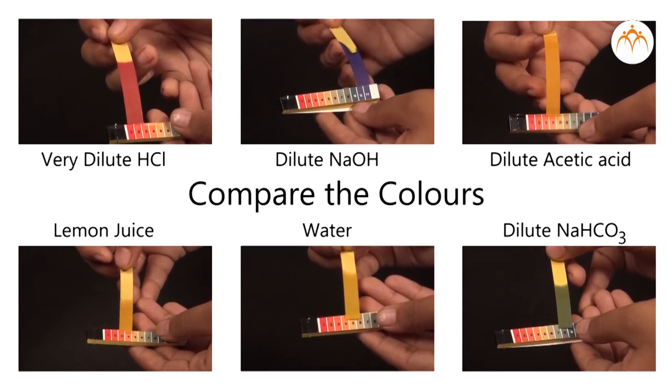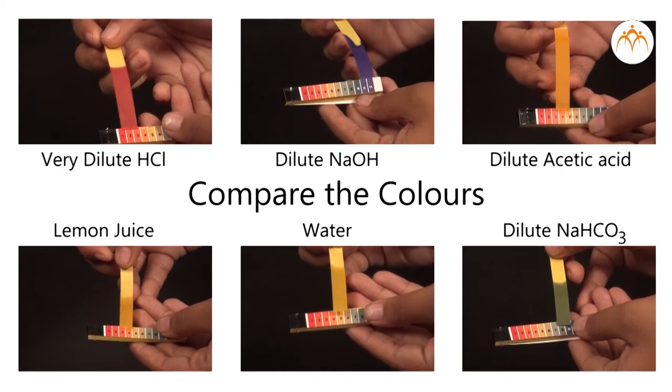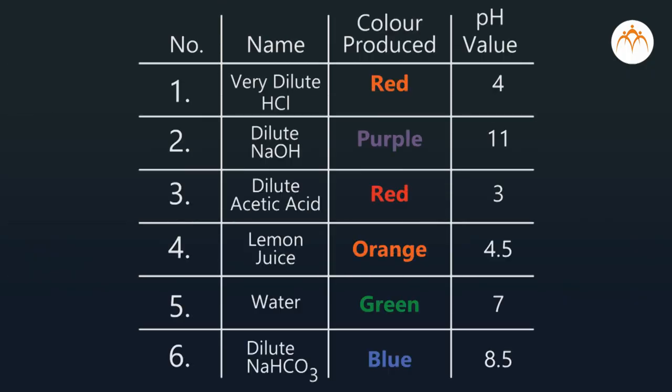We determine the pH of solution from the color produced on the pH paper and note it. We repeat the same procedure for each of the given solutions and note the pH of each of the solutions in the observation table.